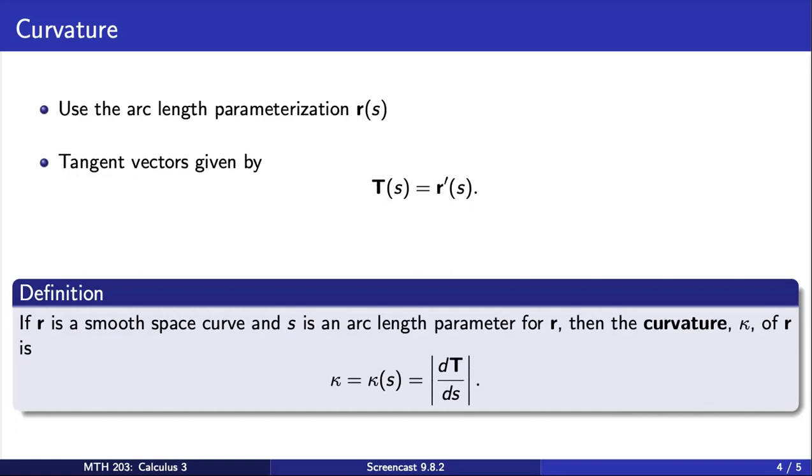We are now ready to state the formal definition of curvature for a vector-valued function r. As noted on the previous slide, to eliminate the dependence on speed, we use the arc length parameterization. Then the tangent vectors, capital T, are given by the derivative of r and the definition of curvature.